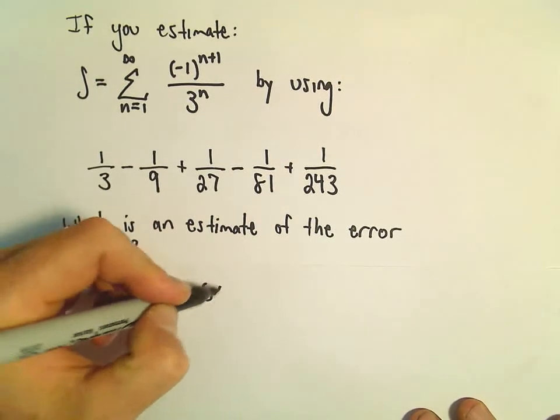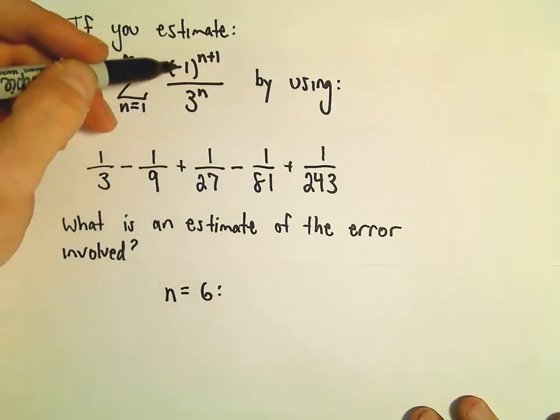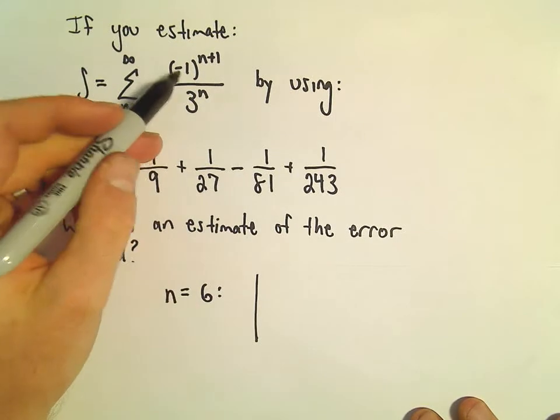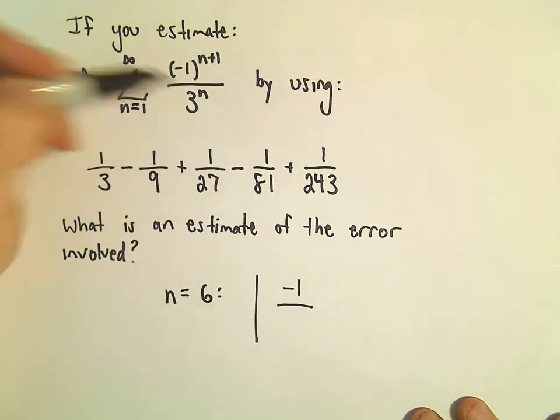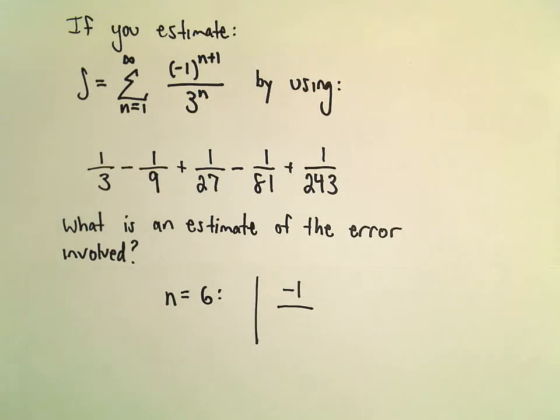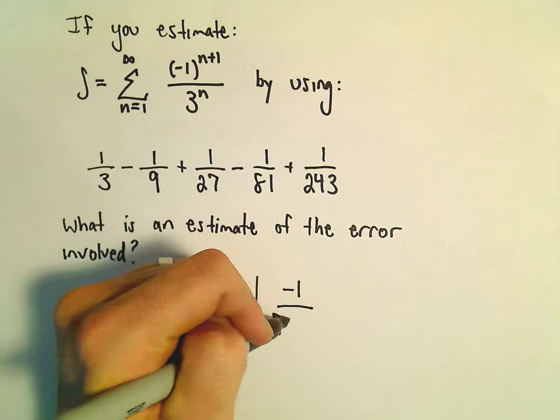If we plug in n equals 6 into our formula, we would get, well, let's see, negative 1 to the 7th. Well, that's just negative 1. Then we would get 3 to the 6th. So 3 raised to the 6th power, just 729.